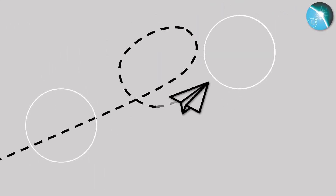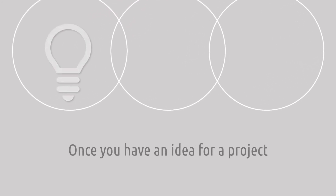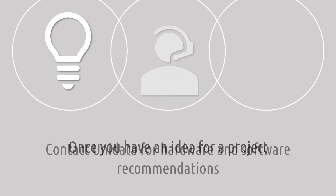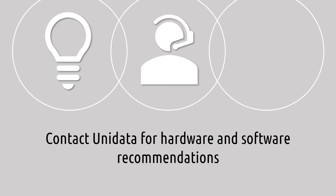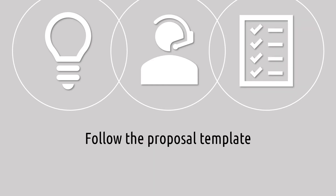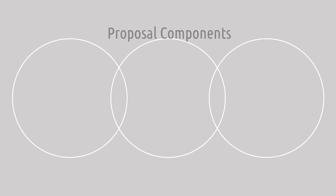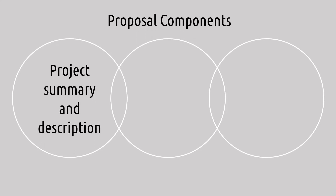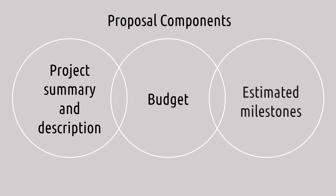Submitting a proposal to the Unidata Community Equipment Award is a simple process that differs from many other proposals. Unidata staff are also available to support you throughout the entire process. Once you have an idea for a project, contact Unidata to discuss recommendations for appropriate hardware and software to ensure your project is set up for success. Then, leverage the provided template to ensure you have all the required information. The proposal requires only a project summary and description, budget, and estimated milestones.